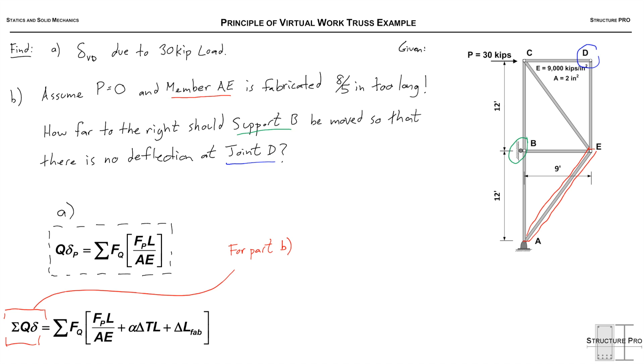For part B, however, we're going to need the more general form of the equation, specifically on the left side of the equal sign, where the support movement comes into place. We're going to see how that plays out when we go through the example.